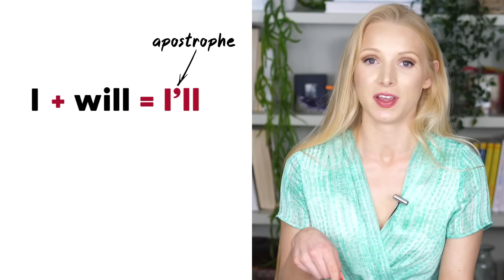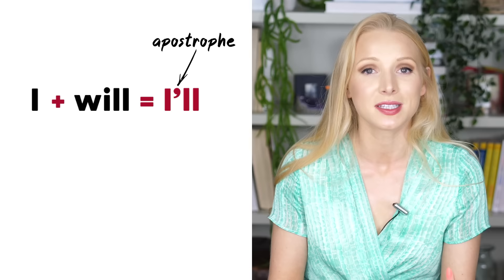Let's take a look at that 'I will' example again — 'I'll'. You'll notice that we use the apostrophe to replace some missing letters. To form contractions, we usually combine a verb, auxiliary or modal with a pronoun. However, there are always exceptions because it's English — we just love exceptions.